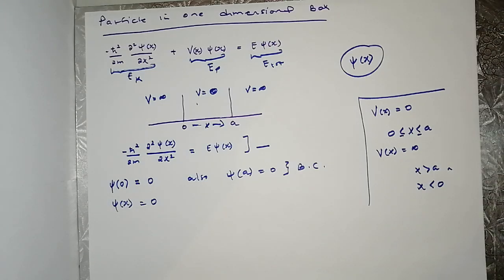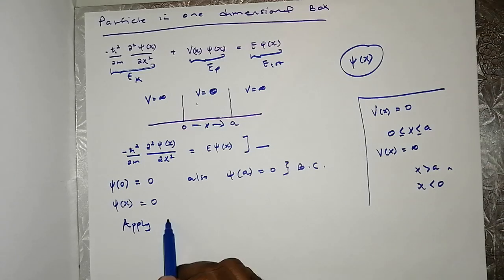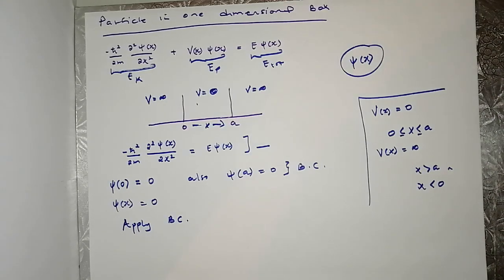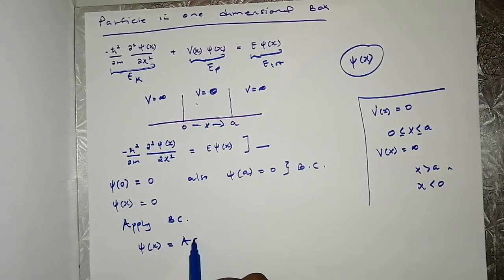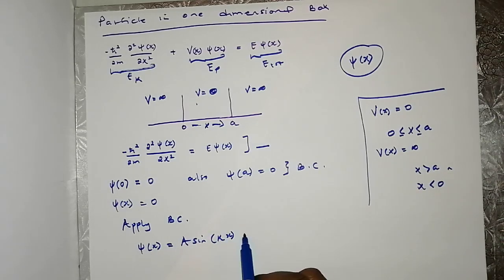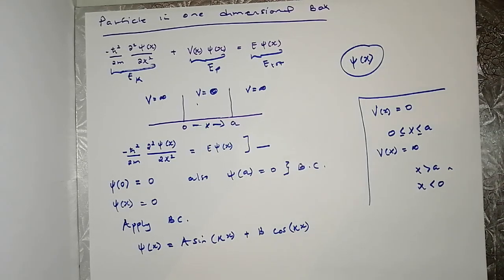We are looking for the wave function of a particle in a box. We are going to apply the boundary conditions to a trigonometric equation. The general solution is: ψ(x) = A sine(kx) + B cos(kx).